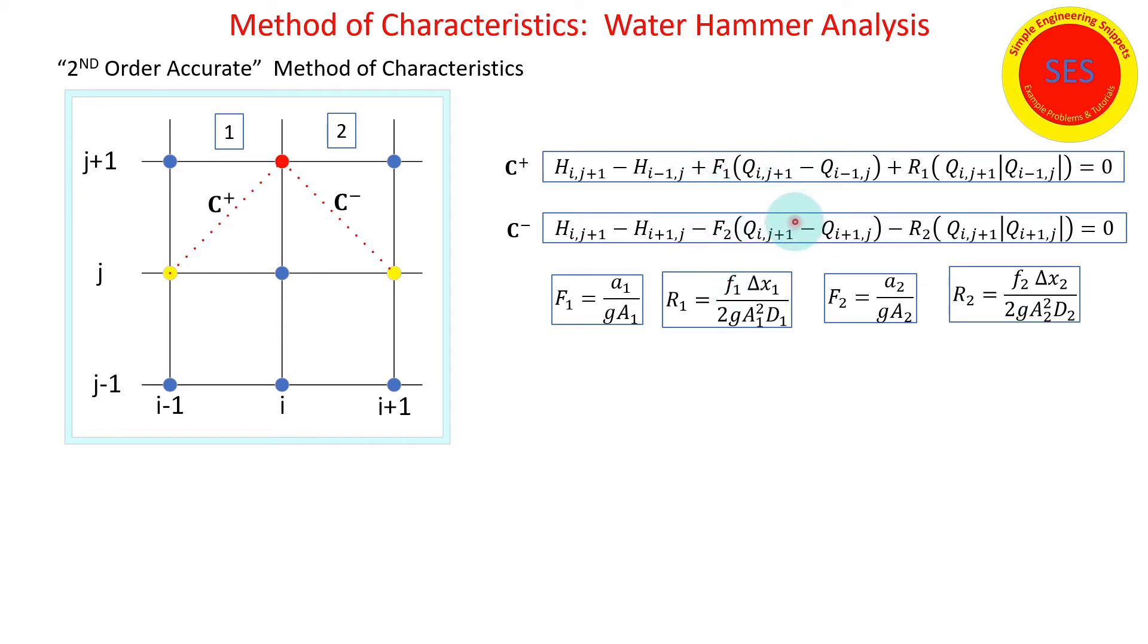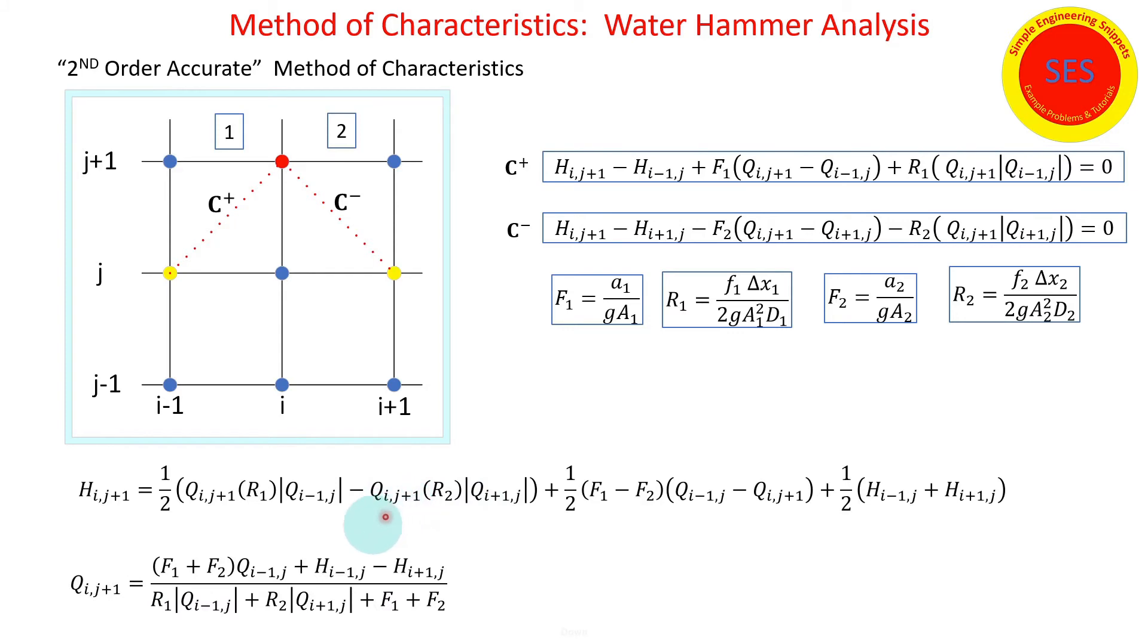So we need to combine these equations to solve for the head and flow at node i time level j plus one. It gets pretty complex. This is the solution for the head at node i time level j plus one. You'll notice that it has the flow at node i j plus one which is an unknown, but luckily when we solve for the flow at node i time level j plus one everything is known so this is doable. We solve for the flow first and then we can substitute in and solve for the head.